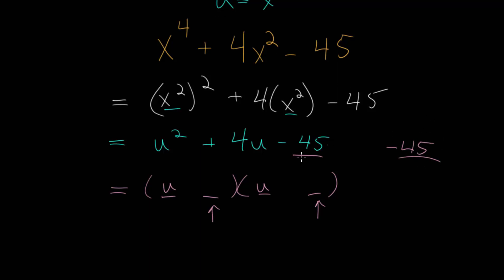We can start by writing out a list of factors of -45. Whichever factor pair works has to add to positive 4. We could have -1 and 45, or -45 and 1, or -5 and 9, or -9 and 5. Since it has to add to 4, -5 and 9 makes the most sense. So we have (u - 5)(u + 9).